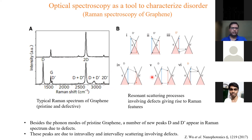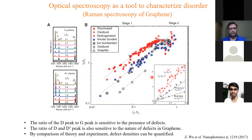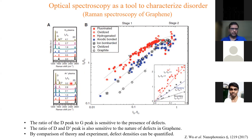Similarly, intervalley resonant processes give rise to the D peak. You can correlate these defect-related peaks with the amount of disorder. For example, when functionalizing graphene with hydrogen plasma — hydrogenating it — the D peak is absent in pristine graphene but evolves with more treatment. When creating vacancies with argon ion bombardment, the D peak also evolves. The ratio of the D peak intensity to the G peak intensity is a measure of the defect density.